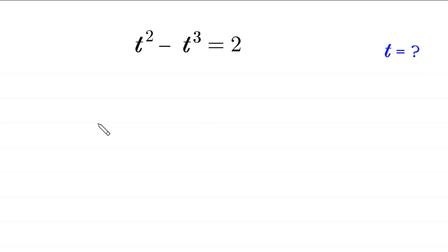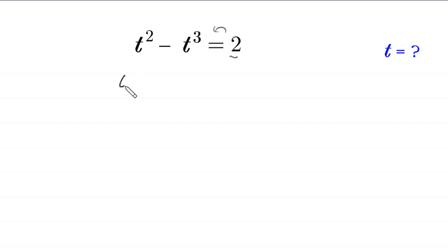Hello everyone, welcome to how to solve this very nice cubic equation: t squared minus t cubed is equal to 2. Our job is to find all possible values of t. Let's start — first we move this 2 to the left hand side, so this will become t squared minus t cubed minus 2 is equal to 0.